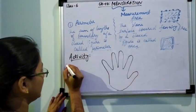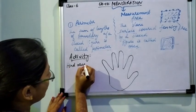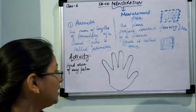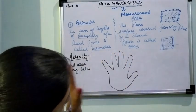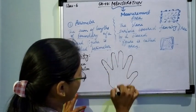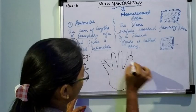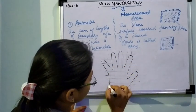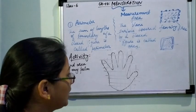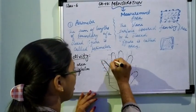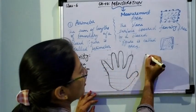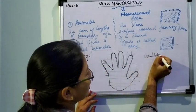The name of the activity is 'Find Area of My Palm.' This is your palm. So find the area of your palm which you have traced on the graph paper. When you look at the graph paper, you will find that it is divided into square boxes. Now, here is how you have to count — counting the complete squares.